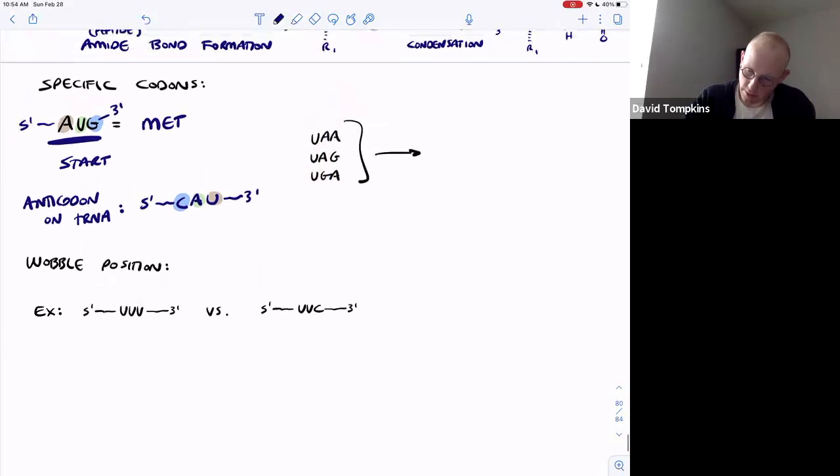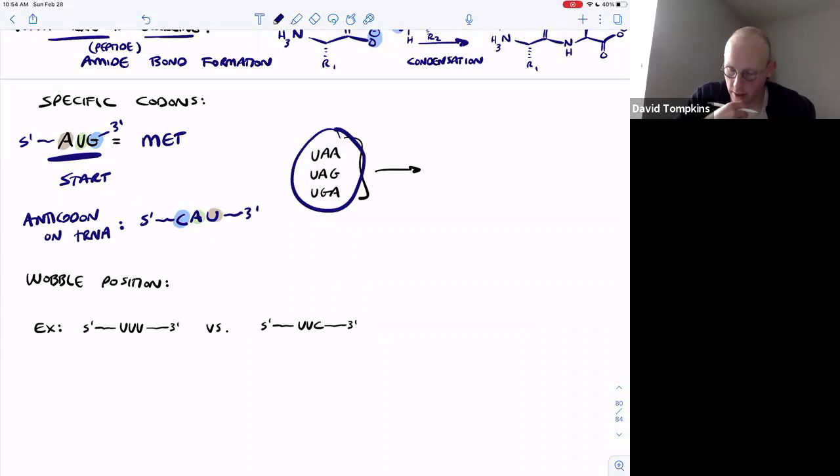Three codons are actually used to initiate or tell the ribosome to dissociate. These are UAA, UAG, and UGA - they stop translation. So we get ribosomal mRNA dissociation and the free peptide is dissociating as well.